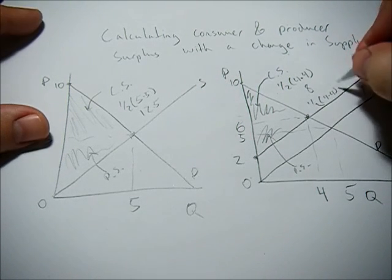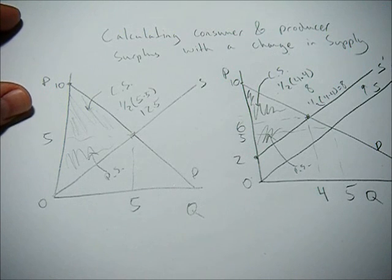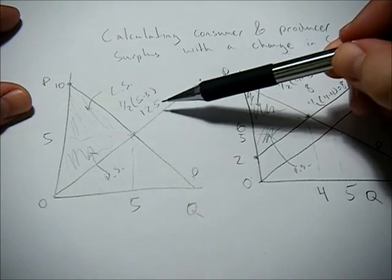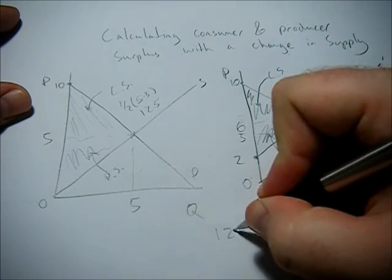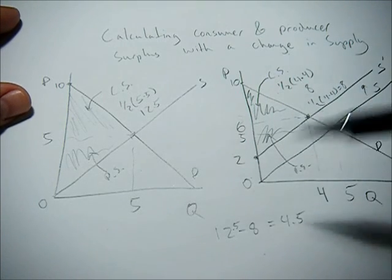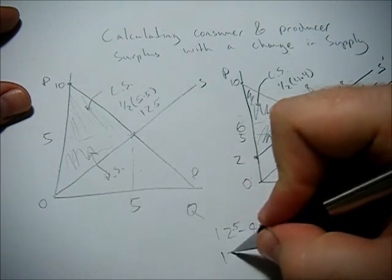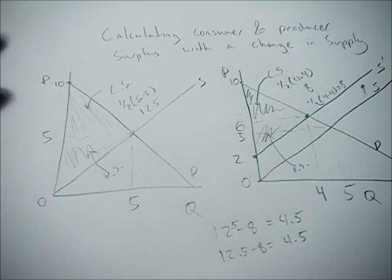So by having this decrease in supply, say input cost increased, or maybe this is a tax or something else, for whatever reason, having supply decrease has caused consumer surplus to change by 4.5, 12.5 minus 8. And producer surplus has declined by the same amount.